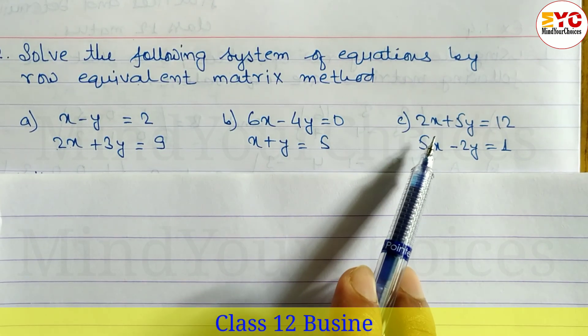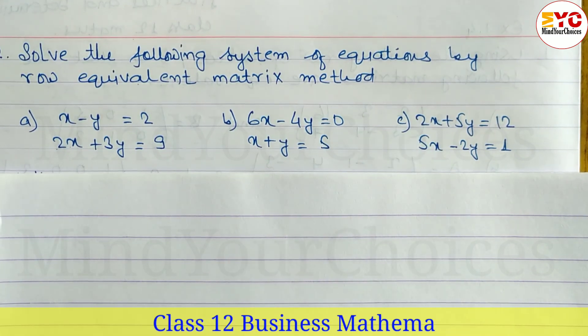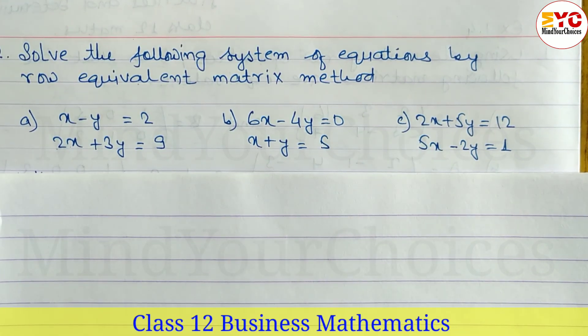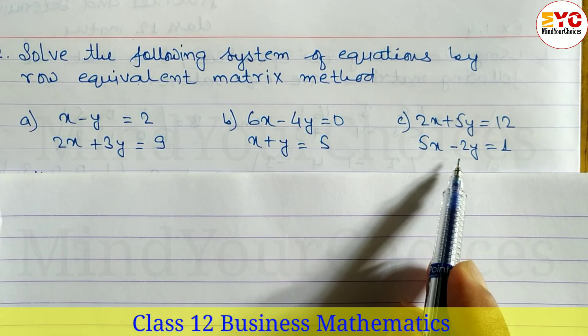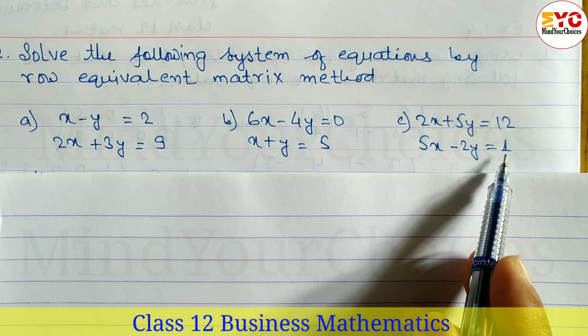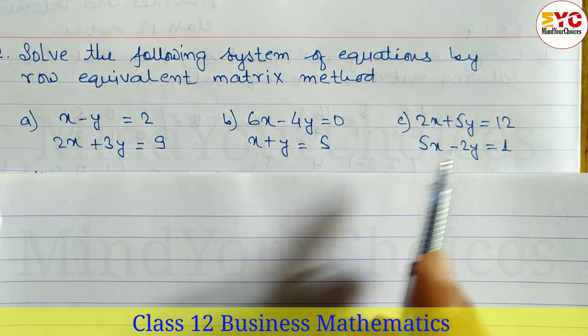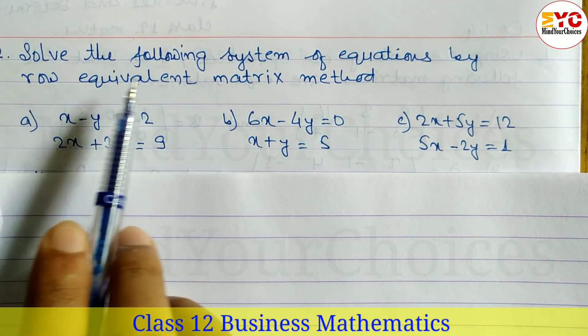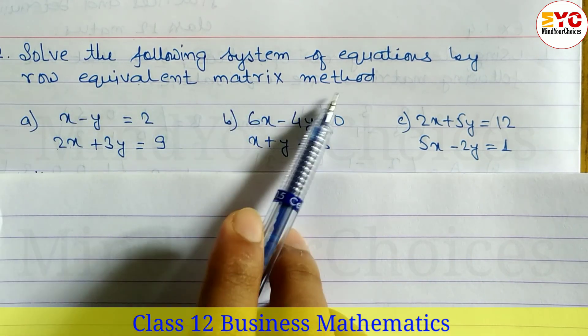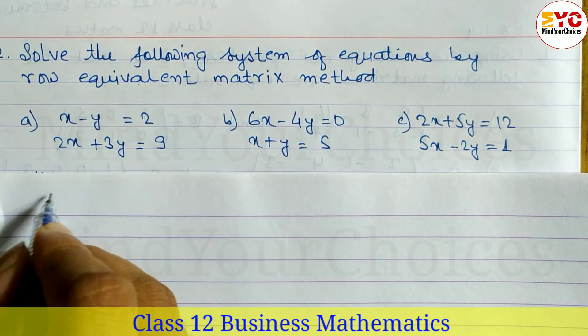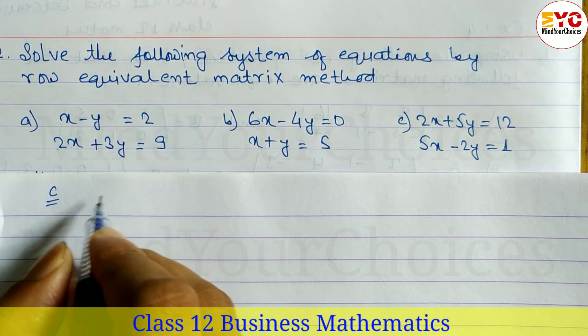Question number 3 is: 2x plus 5y is equal to 12, and 5x minus 2y is equal to 1. We have to solve this by the row equivalent matrix method. So let's get started.